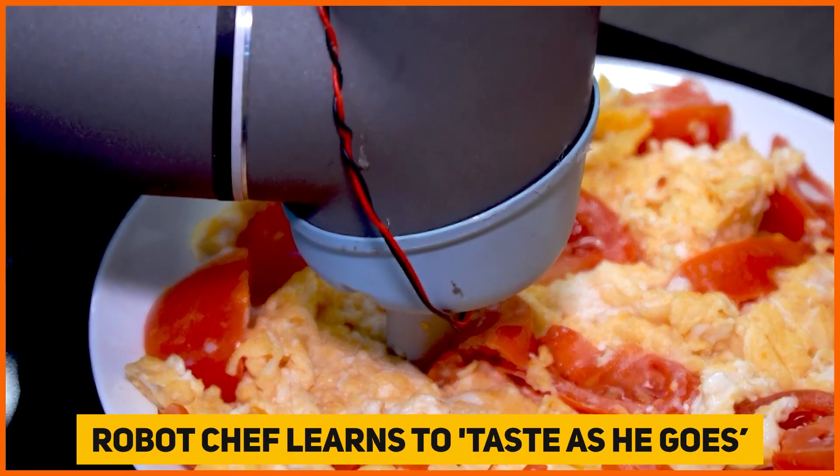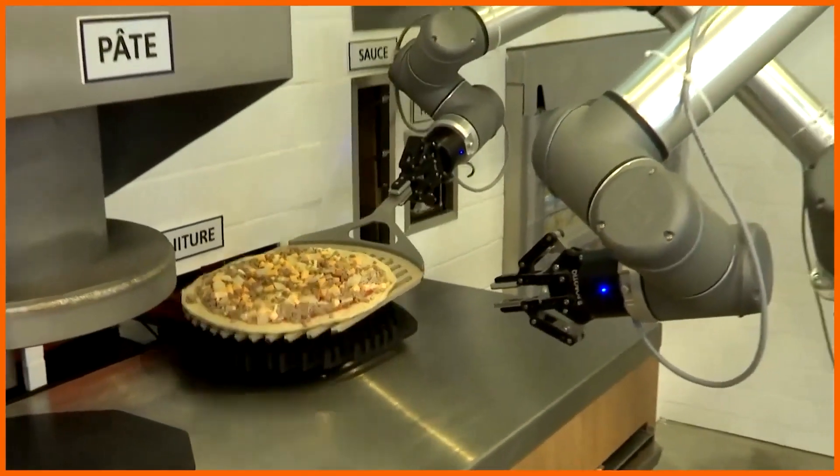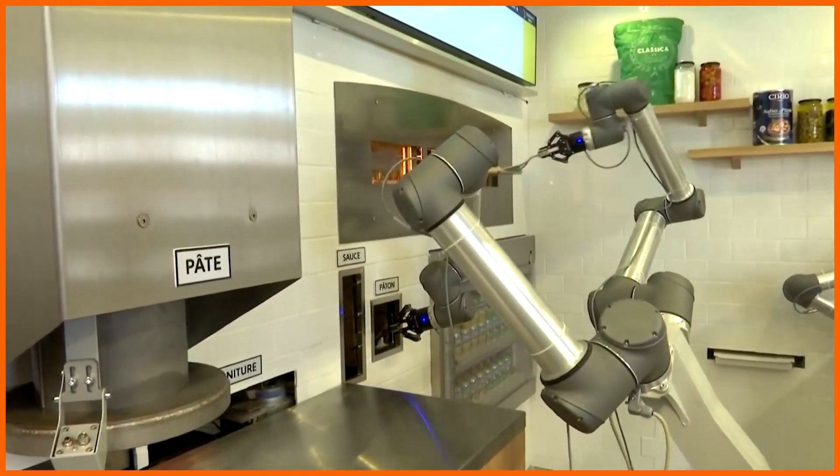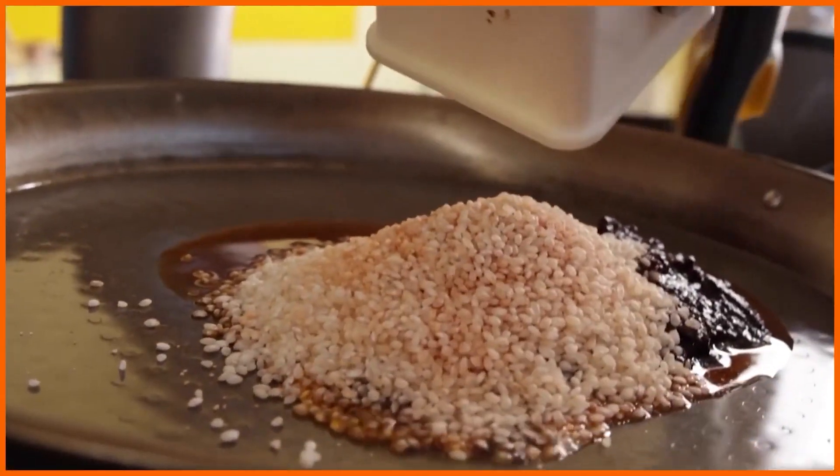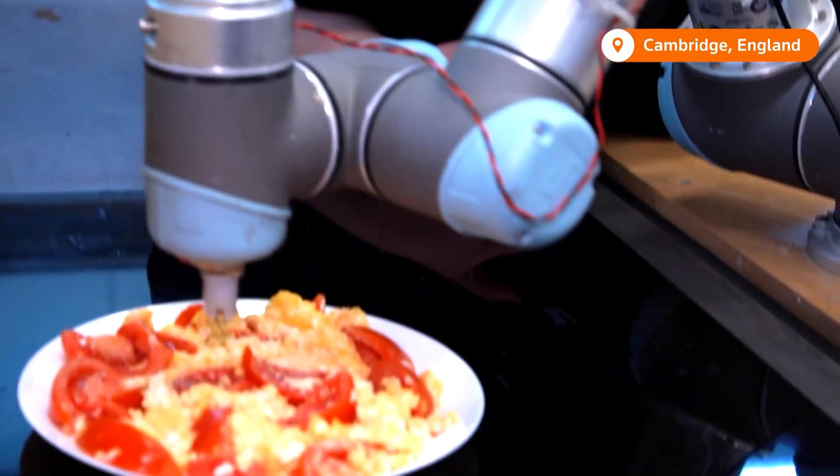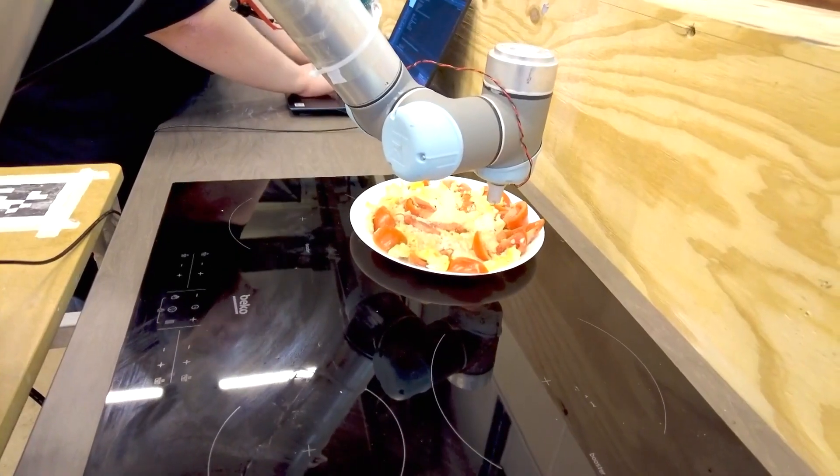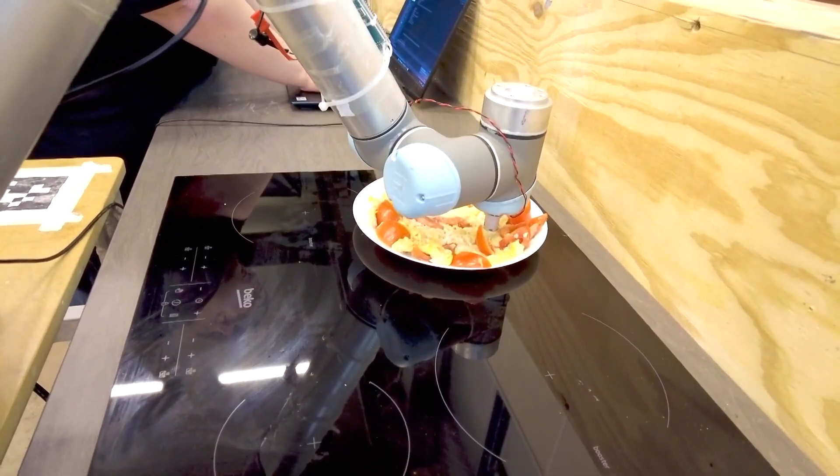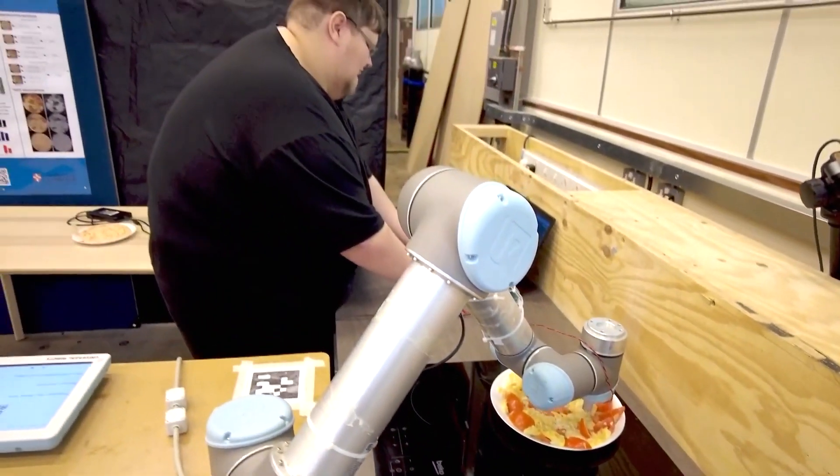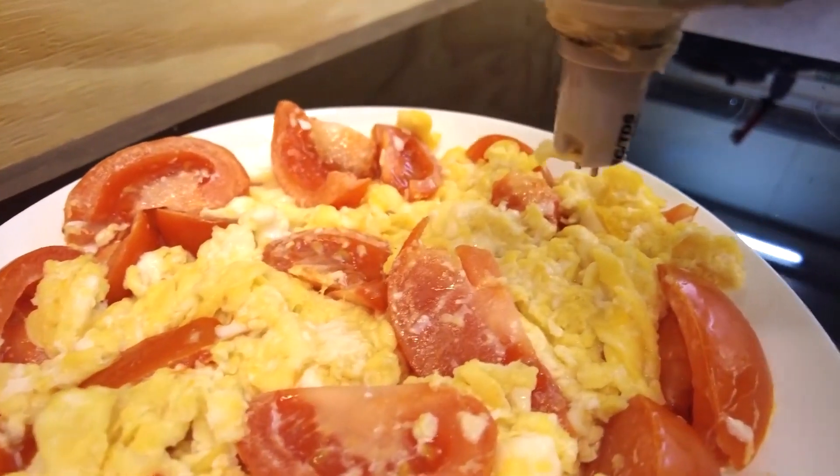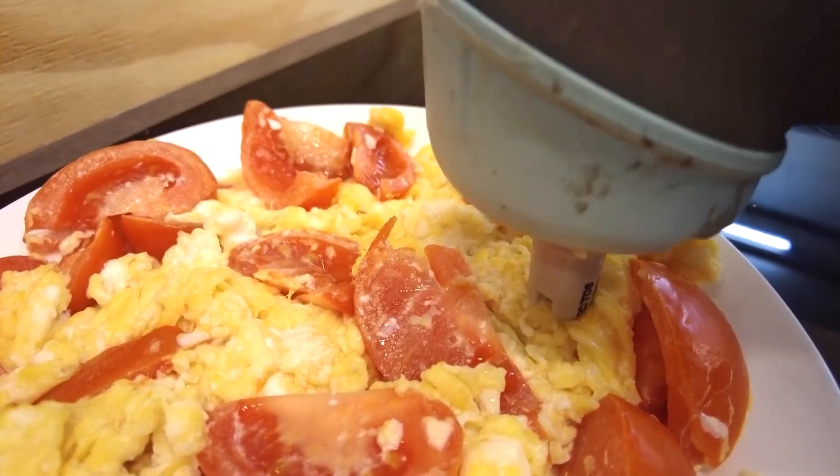Robot chef learns to taste as he goes. A robot chef has been taught to taste food at various stages of the chewing process in order to determine whether it is sufficiently tasty and to see if it is salty enough, similar to how humans do it. The findings of the University of Cambridge researchers could be valuable in the development of automated or semi-automated meal preparation by assisting robots in learning what tastes good and what does not.